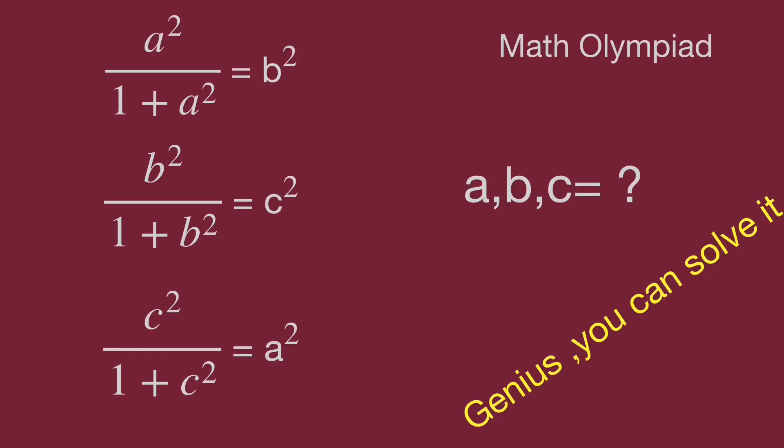Hello, you are watching Balahibo Maths Genius Readdle. Here are the cyclic equations: a² over (1 + a²) equals b². Then a is replaced by b, b is replaced by c, and c is replaced by a, giving us three equations with the same pattern. Find the value for a, b, and c.